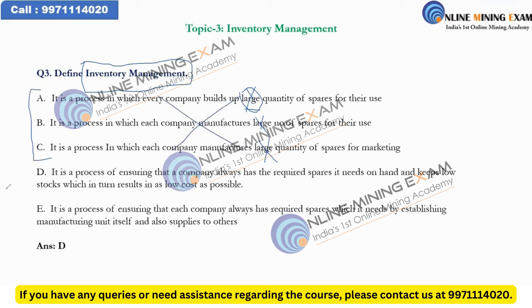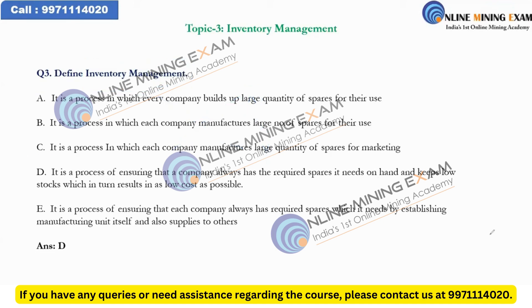You're left with only two options, D and E. Even if you don't know the answer, if you attempt the question it is 50% probable that your answer will be right. This is what I'm talking about — you have to eliminate the wrong answers.